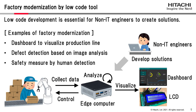The first slide is about the background of factory modernization. In modern factories, low-code development is essential for non-IT engineers to create their original solutions. These are examples of factory modernization use cases. The bottom picture shows a typical IoT system: the edge computer collects sensor data or image data from the production lines, analyzes the data, and visualizes them to a dashboard or LCD. As needed, it controls the robot in the production lines. Thanks to low-code tools, non-IT engineers can develop and improve the system themselves, based on their knowledge about the production lines.